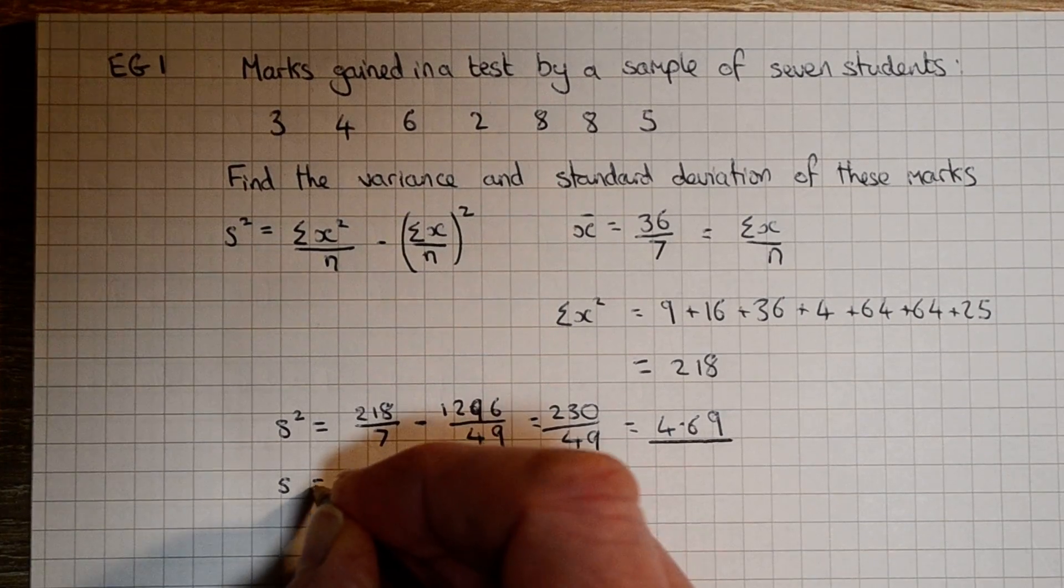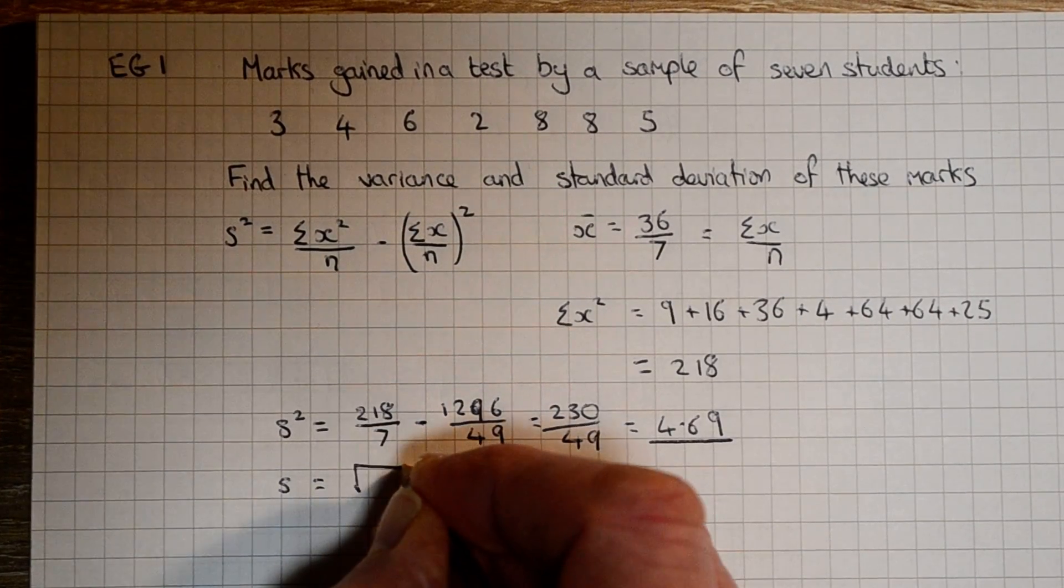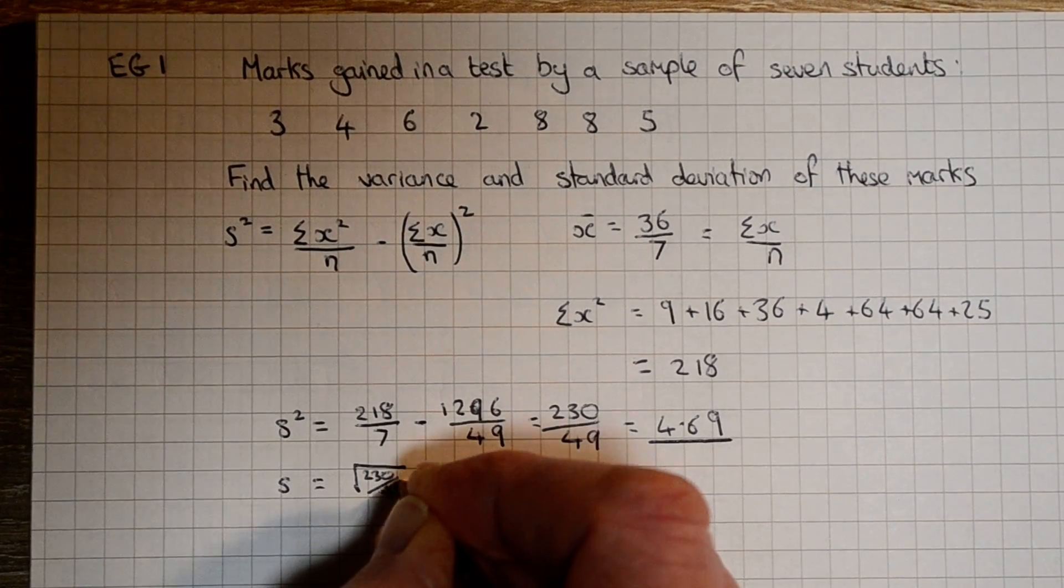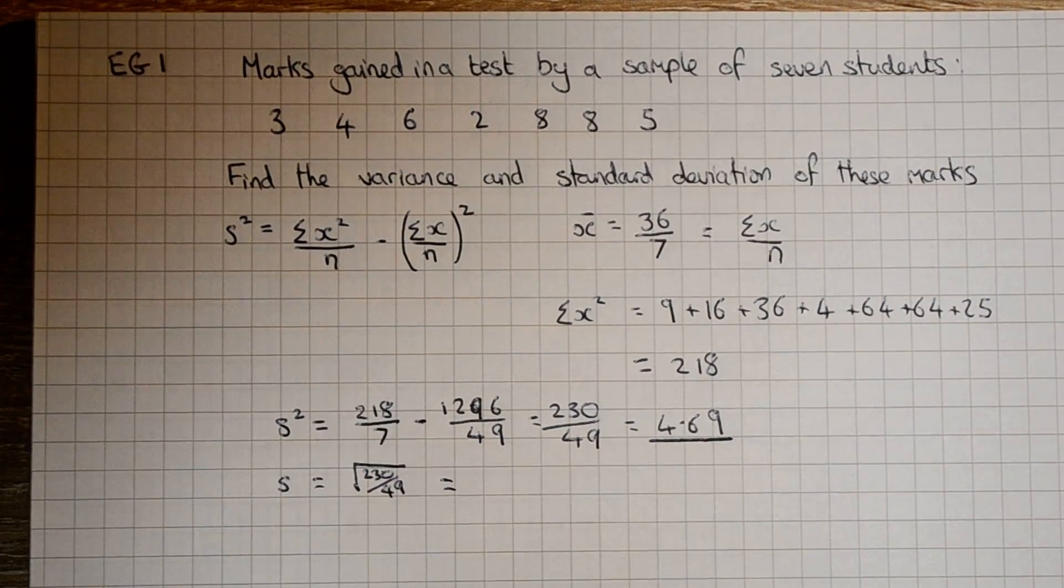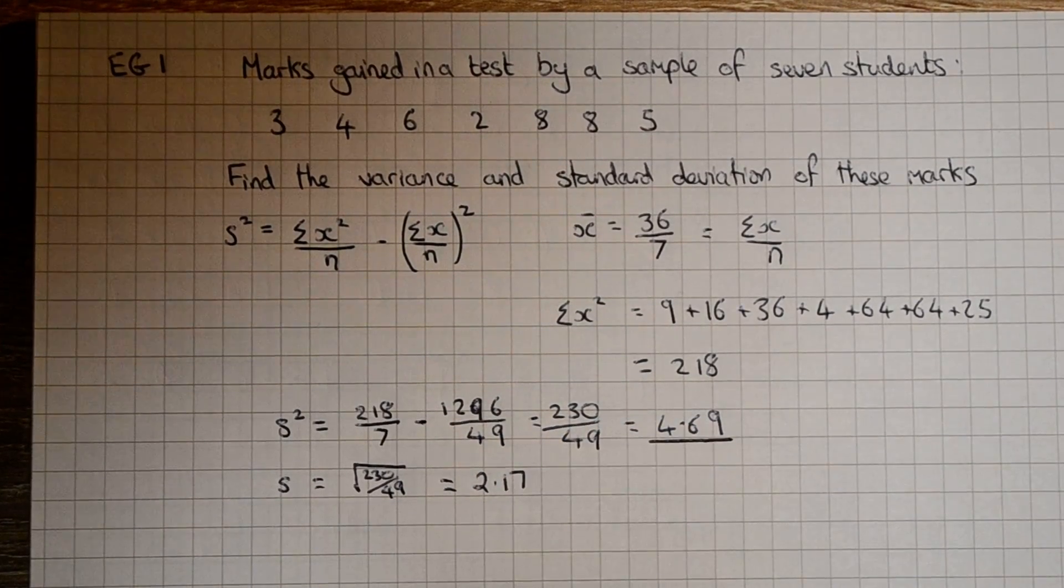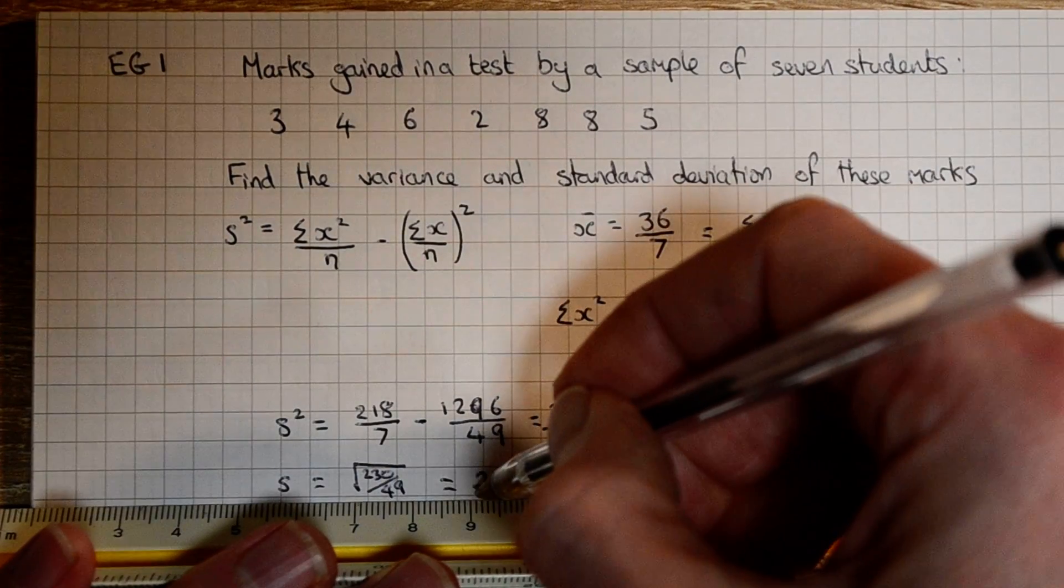So the standard deviation itself is going to be the square root. And to 3 sig figs, there's our standard deviation.